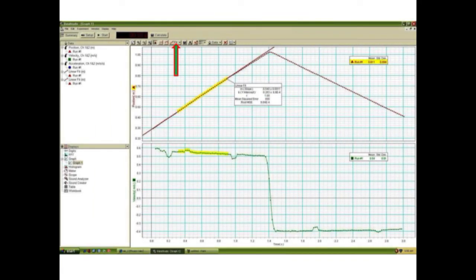Highlight a linear region of the position graph with positive slope and perform a linear fit using the fit menu button. Record the slope m along with its error. Highlight the corresponding velocity data below and click on the statistics button, shaped like the Greek letter sigma, to record the mean and standard deviation of velocity.